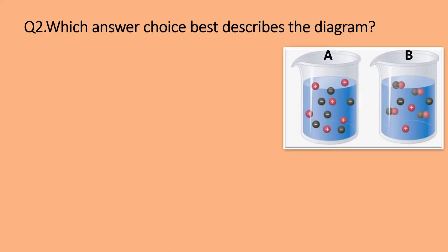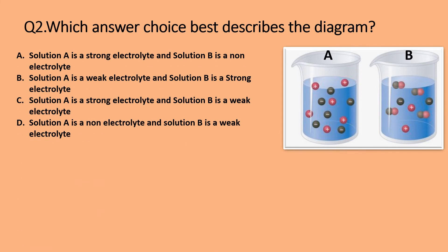Question 2: Which answer choice best describes the diagram? The options are: A. Solution A is a strong electrolyte and solution B is a non-electrolyte. B. Solution A is a weak electrolyte and solution B is a strong electrolyte. C. Solution A is a strong electrolyte and solution B is a weak electrolyte. D. Solution A is a non-electrolyte and solution B is a weak electrolyte. As seen in the figure, in solution A the electrolytes are completely dissociated into positive and negative ions. So the correct option is C: solution A is a strong electrolyte and solution B is a weak electrolyte.